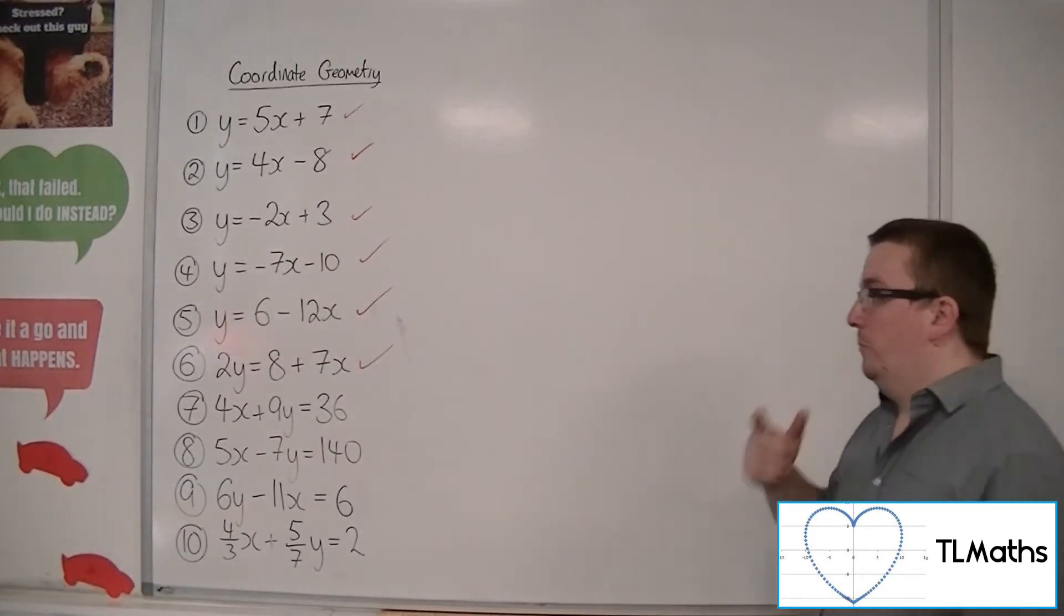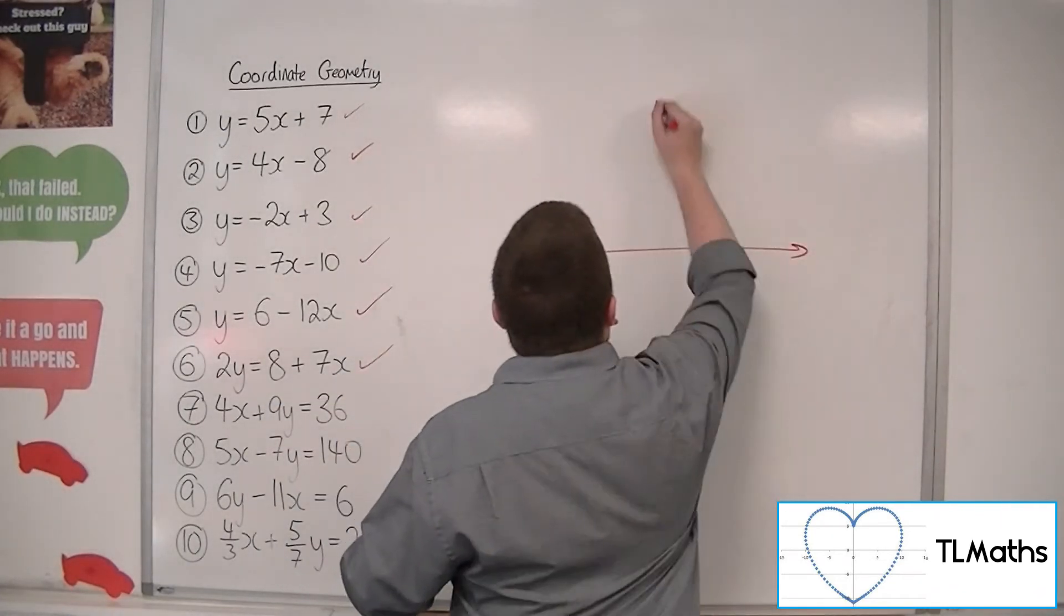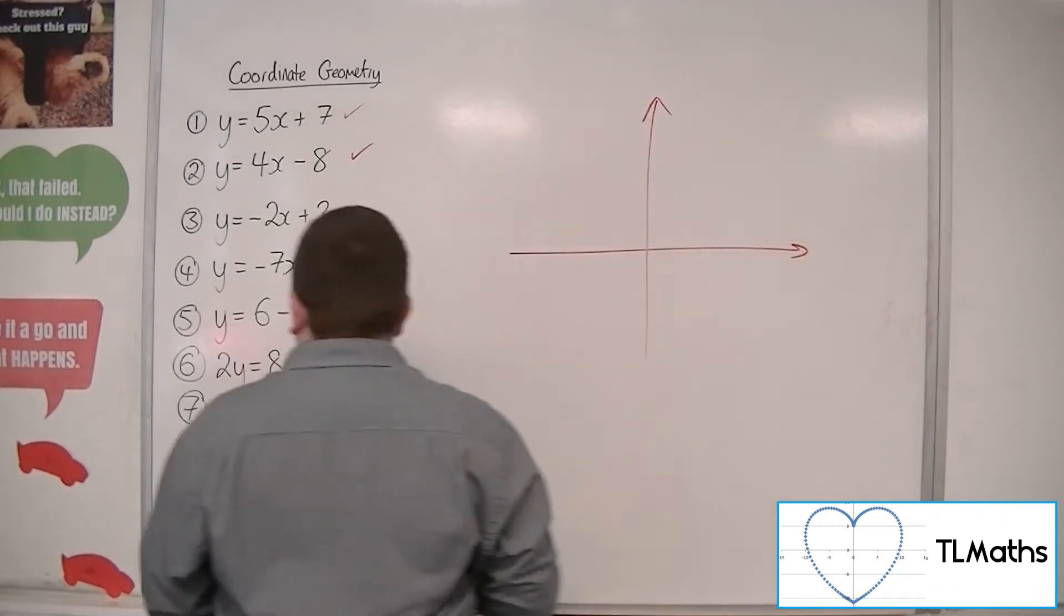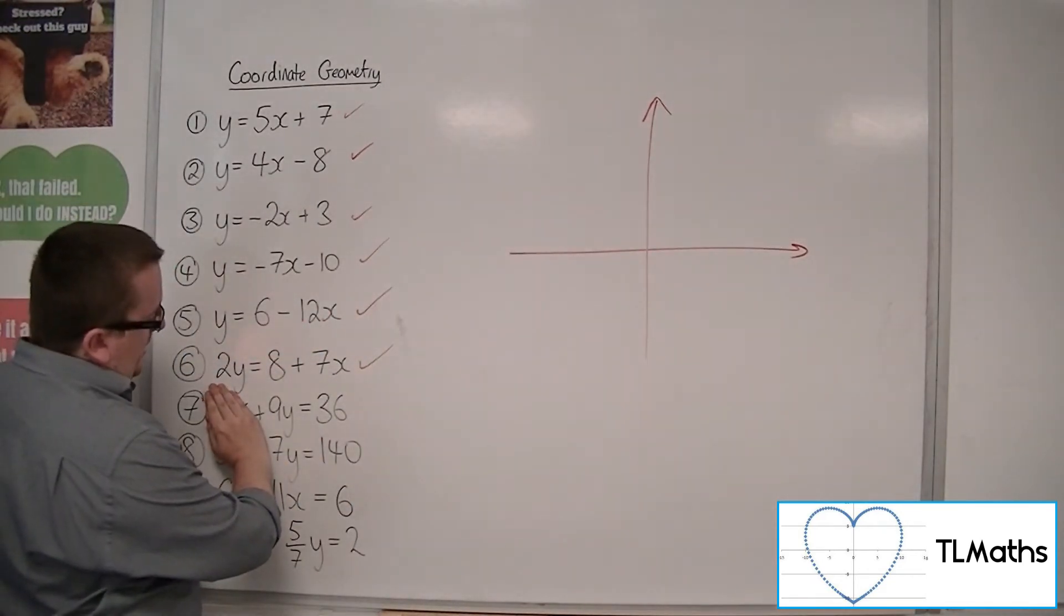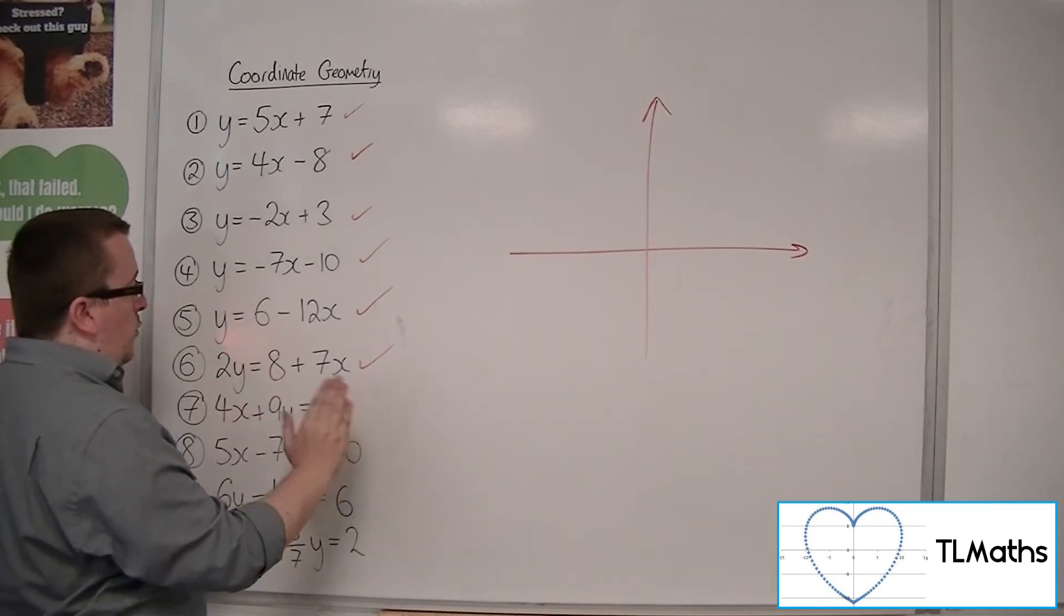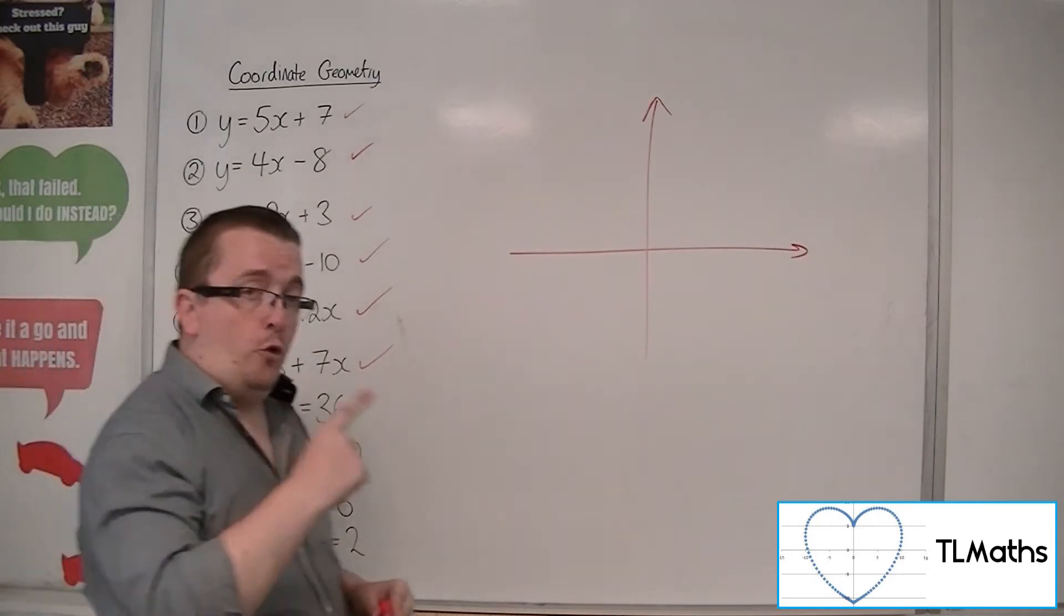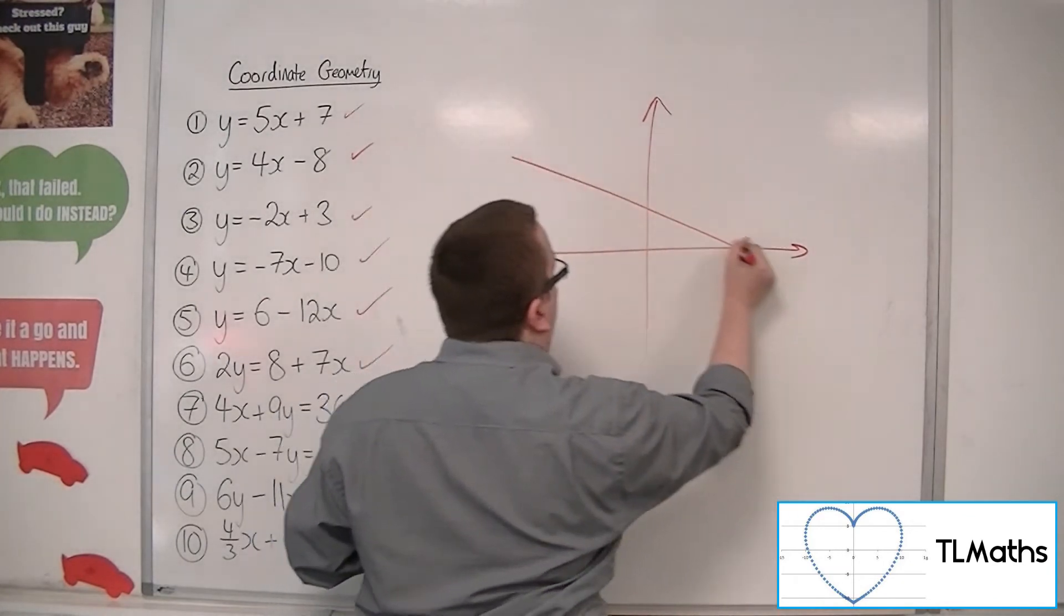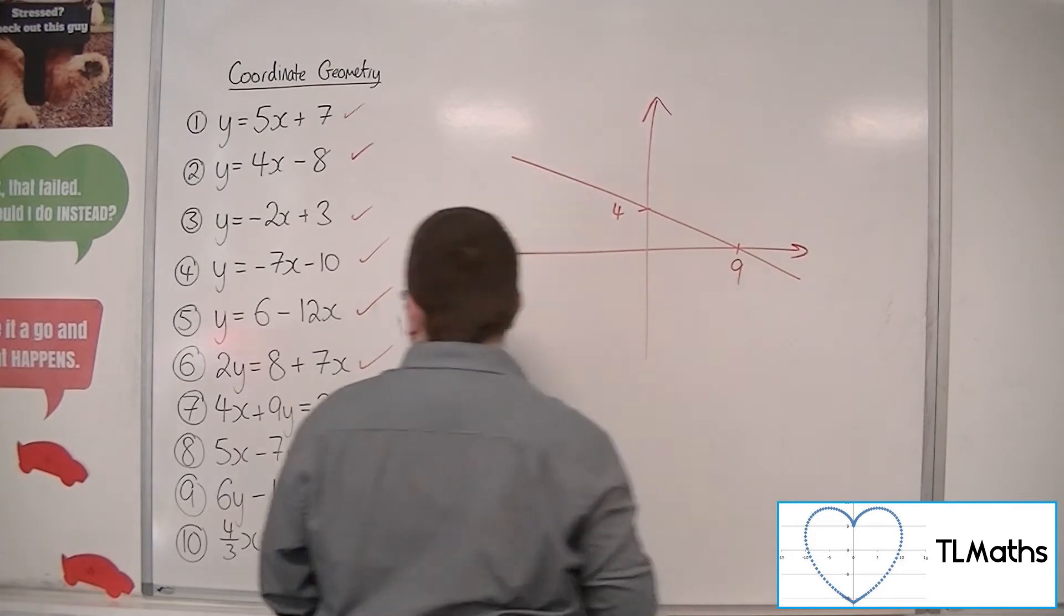Number 7, 4x plus 9y equals 36. Okay, so for this, when x is 0, we get 9y equals 36. So y would have to be equal to 4. And when y is 0, we get x must be equal to 9. So it's crossing through 4 on the y-axis, 9 on the x-axis. So something like that. There's 4. There's 9.